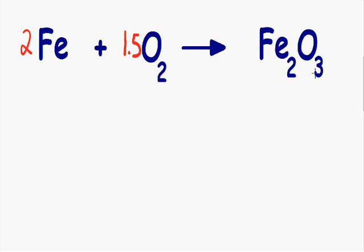So now we have the same number of iron and oxygen on both sides. But are we finished? The answer is no, because we can never have half a molecule. Notice how we have one-and-a-half molecules of oxygen. So how do we get rid of half a molecule? The answer is to multiply both sides by two.